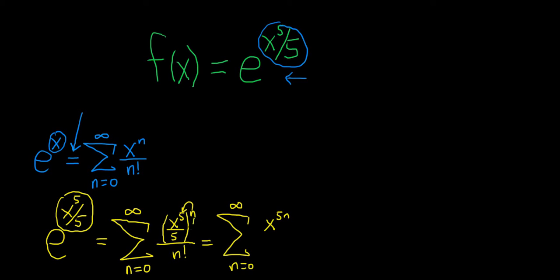So it'll be x to the 5n. And then you also raise this one to the nth power. So this is 5 to the n, and this is in parentheses, and it's all over n factorial.